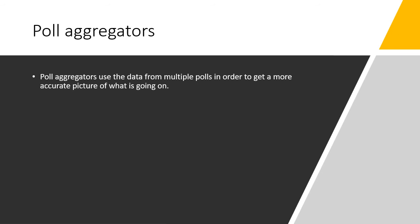That brings us to another practice related to polls: poll aggregation. What a poll aggregator does is use data from multiple polls to get a more accurate picture of what's going on. Journalists who know about this sort of thing try to tell you not to get too excited about any one poll, because in an environment where lots of polls are being conducted, paying attention to data from multiple places can really be useful. Poll aggregation itself is pretty tricky — it's much more complicated than simply taking an average of poll results.